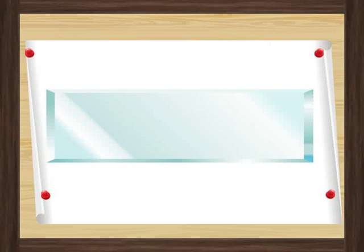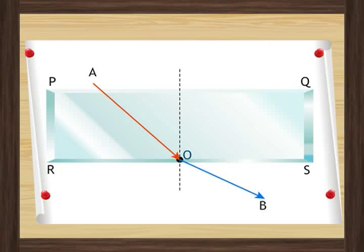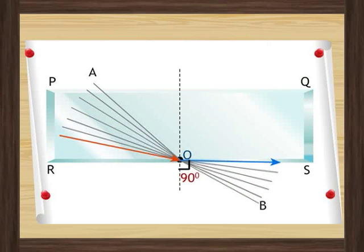See the rectangle PQRS that represents the glass slab on the screen and the incident ray of light shown by AB. If the angle of refraction becomes equal to 90 degrees, then it is called the critical angle of the glass slab.